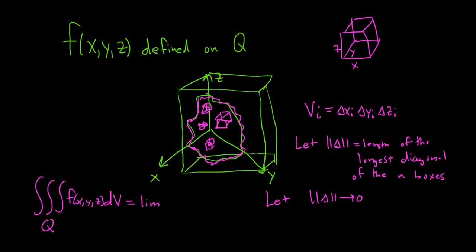It's equal to the limit as the norm goes to 0 of the sum, as i runs from 1 to n, of your function f of x sub i, y sub i, z sub i, that's a point inside the box, delta V sub i. So you take the limit, so you basically multiply the volume of the box by the function, you take the limit, the limit of the sum, and you call that the triple integral.